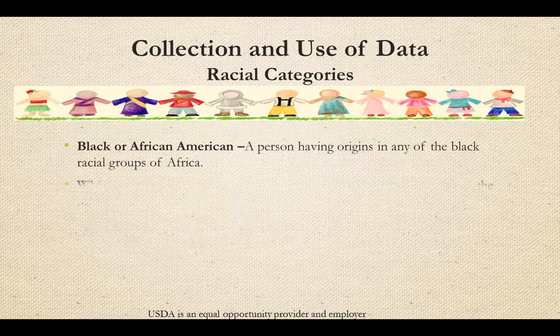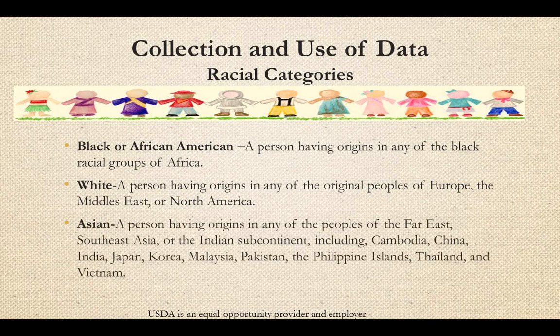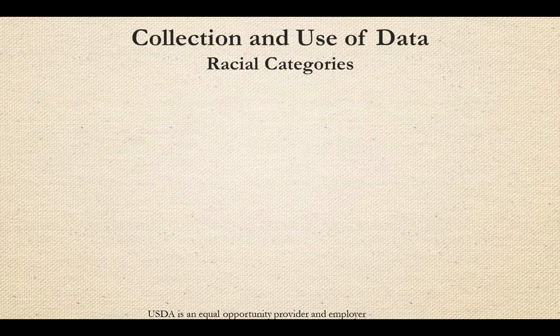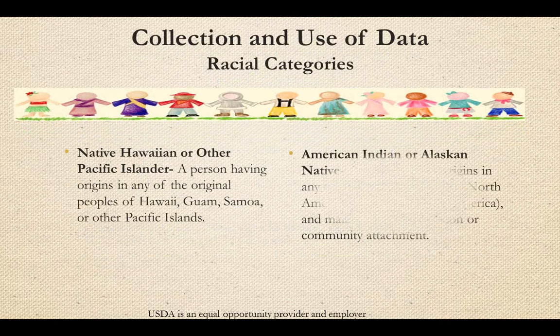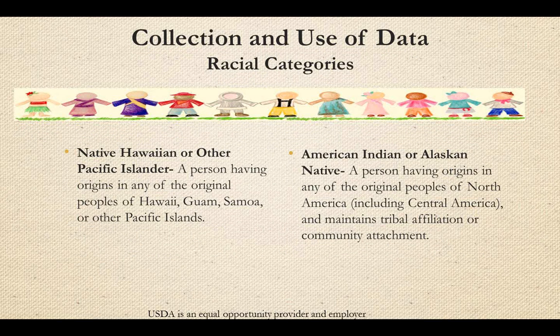Race refers to a specific country of origin of the program participant. Racial categories include: Black or African American — a person having origins in any of the black racial groups of Africa; White — a person having origins in any of the original peoples of Europe, the Middle East, or North America; Asian — a person having origins in any of the peoples of the Far East, Southeast Asia, or the Indian subcontinent including Cambodia, China, India, Japan, Korea, Malaysia, Pakistan, the Philippine Islands, Thailand, and Vietnam; Native American or other Pacific Islander — a person having origins in any of the original peoples of Hawaii, Guam, Samoa, or other Pacific Islands; and American Indian or Alaskan Native — a person having origins in any of the original peoples of North America, including Central America, and who maintains tribal affiliation or community attachment. Please make sure that all program participants are documented by both race and ethnicity.